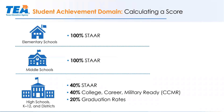How do we calculate a score for student achievement? If you're an elementary school or a middle school, 100% of your student achievement domain score comes from STAAR test results. If you're a high school, K-12, or a district that graduates seniors, then 40% of your letter grade will come from STAAR test results, 20% will come from graduation rates, and 40% will be based on whether or not your graduating seniors are college, career, or military ready.